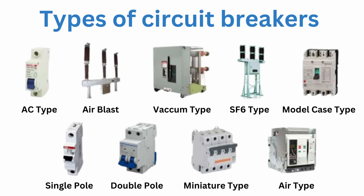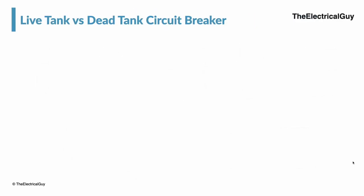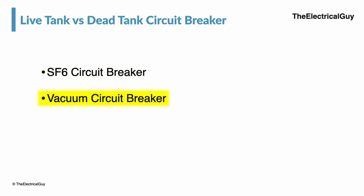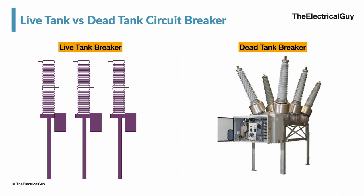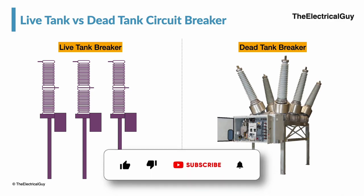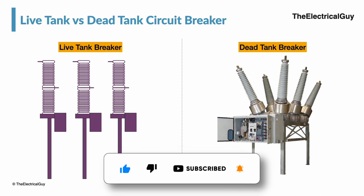There are different types of circuit breakers, like SF6 circuit breakers, vacuum circuit breakers, air blast circuit breakers, and many more. When we talk about high and extra high voltage circuit breakers, we also see live tank and dead tank circuit breakers. In this video I will give you a practical comparison of live tank and dead tank circuit breakers.